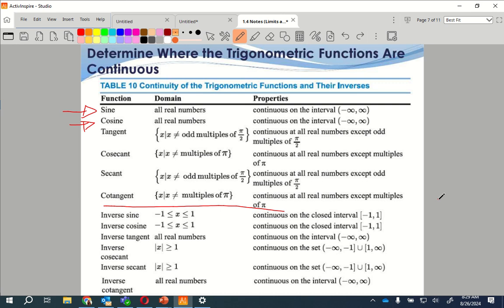Alright, so going through here, determining where trigonometric functions are continuous. Now, remember, sine and cosine are waves. Tangent, cotangent are not.